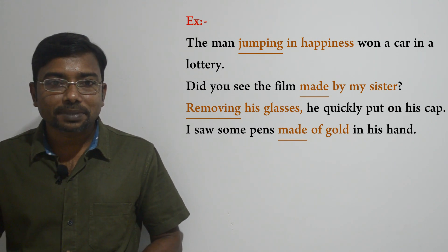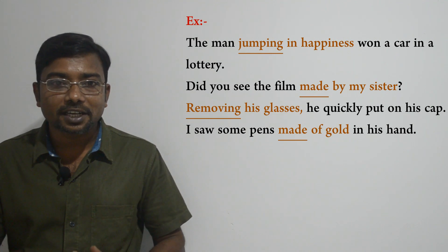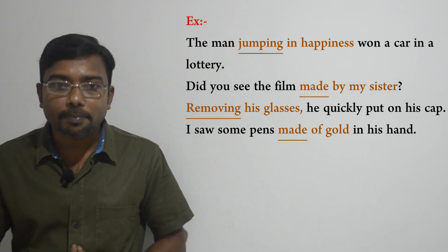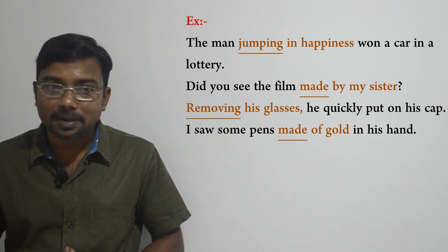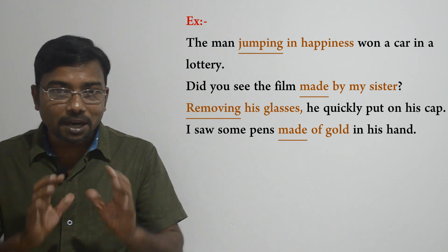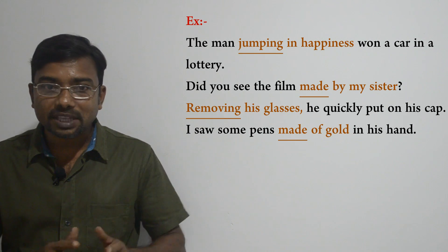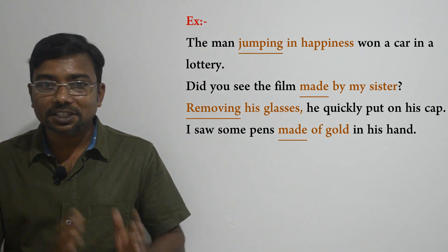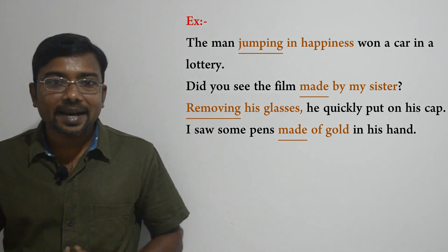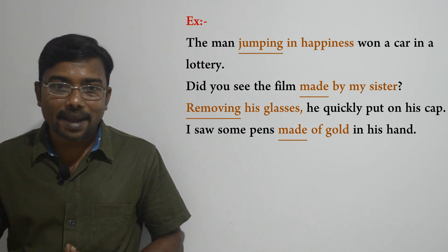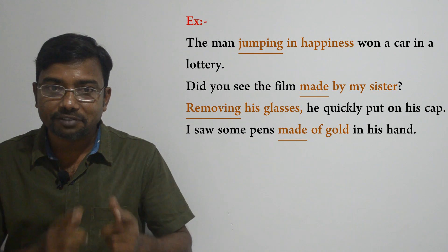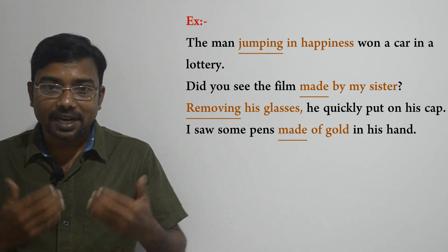Let's consider the first example: 'The man jumping in happiness won a car in a lottery.' Can you identify the participle phrase? Remember, a participle phrase always begins with a participle — it can be a present or past participle — and appears directly before or after a noun or pronoun to modify it. Here, 'jumping in happiness' is the participle phrase because it begins with the participle 'jumping.' The participle phrase appears at the middle of the sentence.